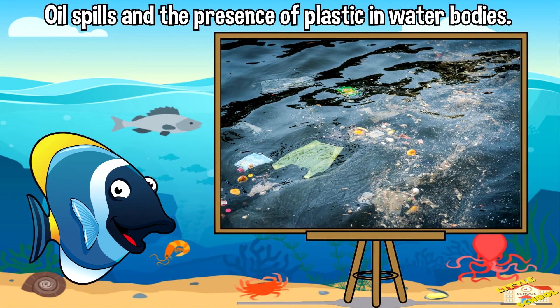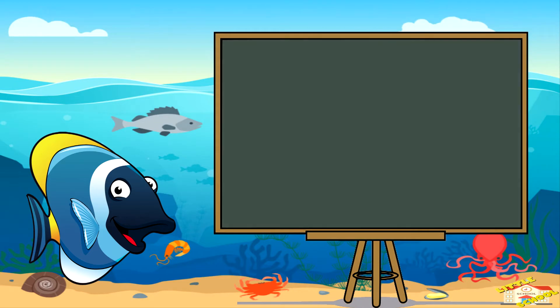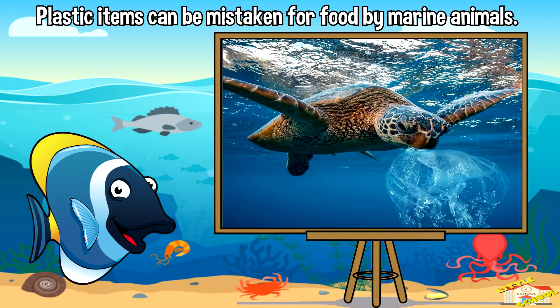Oil and plastic pollution: oil spills and the presence of plastic in water bodies are forms of pollution that harm marine life. Oil can coat the feathers of birds and the fur of mammals, making it difficult for them to move or fly. Plastic items can be mistaken for food by marine animals, causing ingestion and sometimes death.